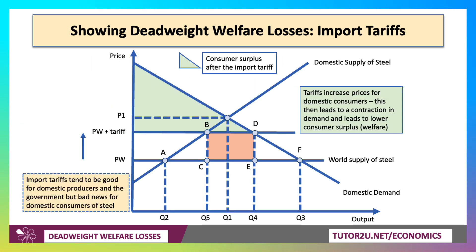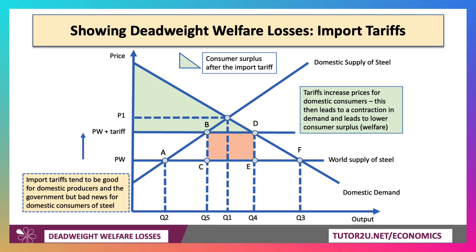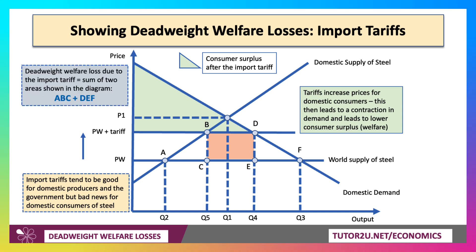And then an import tariff — a tariff on a product, in this case a tariff on steel — which increases the price of steel for domestic consumers. There's a fall in consumer surplus and consumer welfare. The orange bit is the tax revenue. But the welfare losses are the areas ABC and DEF.